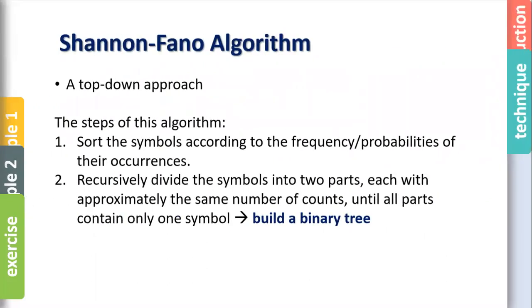So basically a top-down approach. You will use a binary tree later on. The steps: first sort the symbols according to the frequency or probabilities of their occurrence from the most frequent until the less. And recursively divide the symbols into two parts with approximately the same number of counts until all parts contain only one symbol. I'll give you examples.